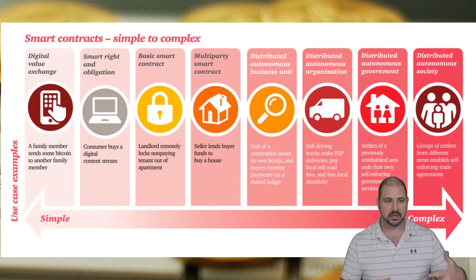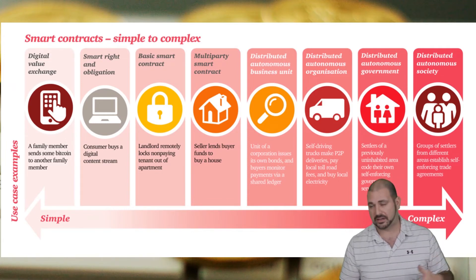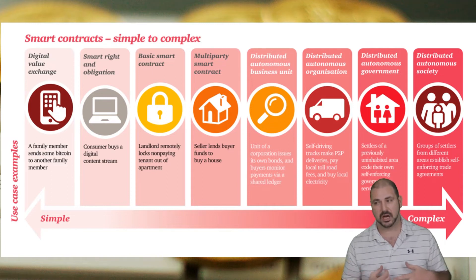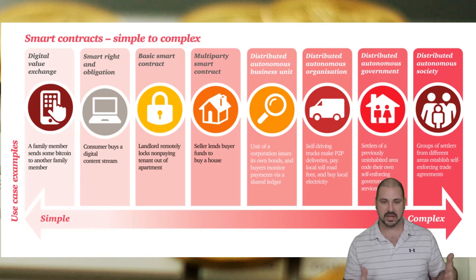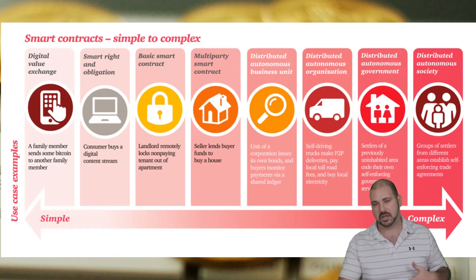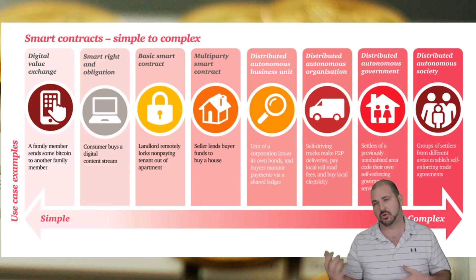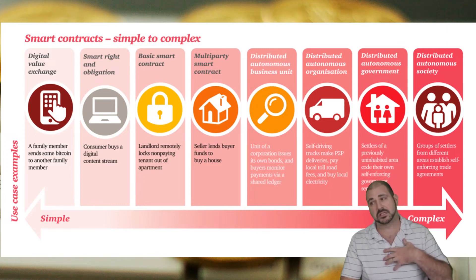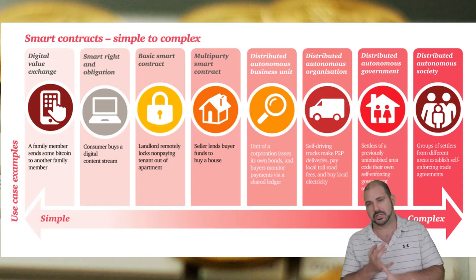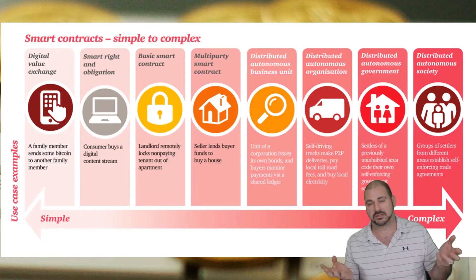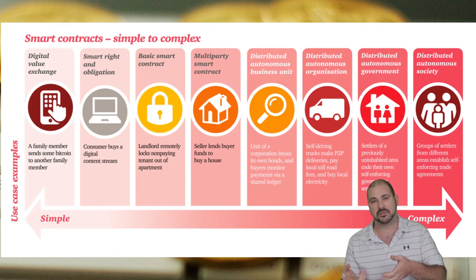Smart contracts aren't that smart right now but they'll get smarter over time — this is still in its infancy. There have been smart contract hacks like the Parity hack, and DAOs can get hacked too. They're still developing and improving. Over time when we perfect them, they could cut out lawyers and brokers entirely, enabling more peer-to-peer transactions. For example, as a landlord you'd save on listing fees, showing fees, and agent costs — and pass those savings on to tenants.